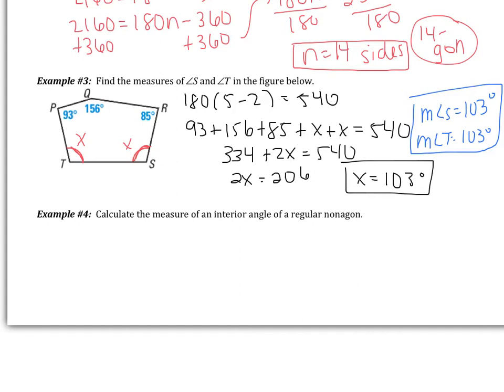We have one more example before moving on to the next topic. Example 4 says calculate the measure of an interior angle of a regular nonagon. So we need to digest this a little bit. Calculate the measure of an interior angle. So that means one angle of a regular nonagon. Nonagon, that means I have nine sides. Regular means that the figure is equilateral and equiangular. So it means all the angles are going to be congruent. So let's see if you can do this one. Pause the video and try this one on your own. I'm going to suggest that you start with this formula. Good luck.